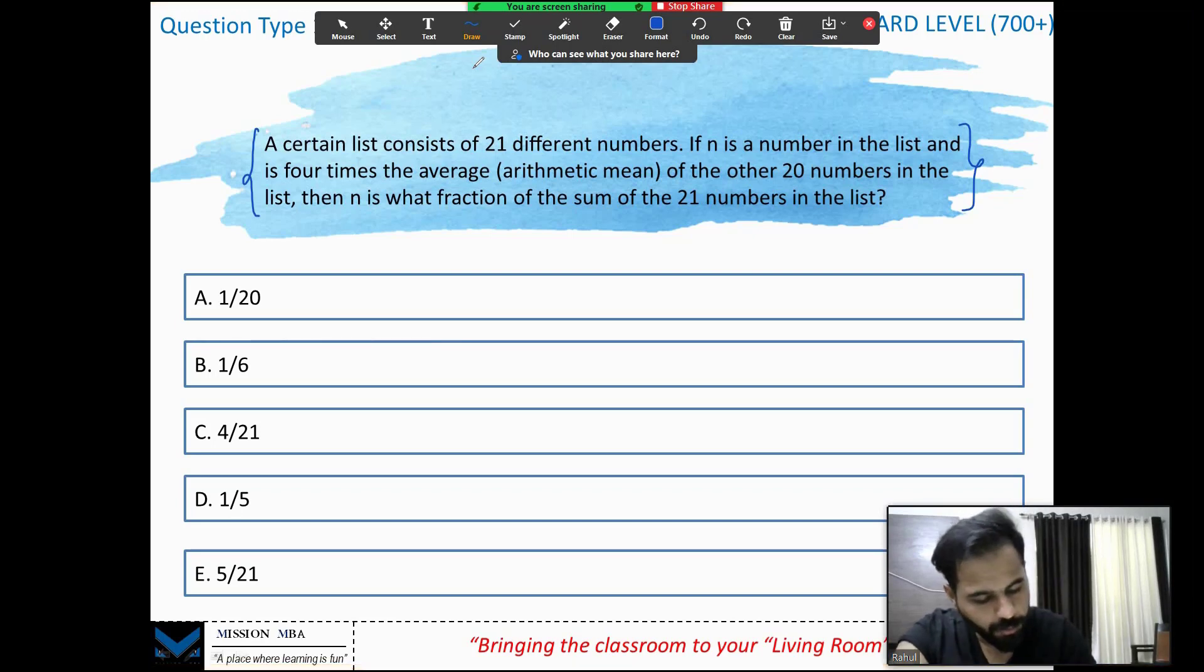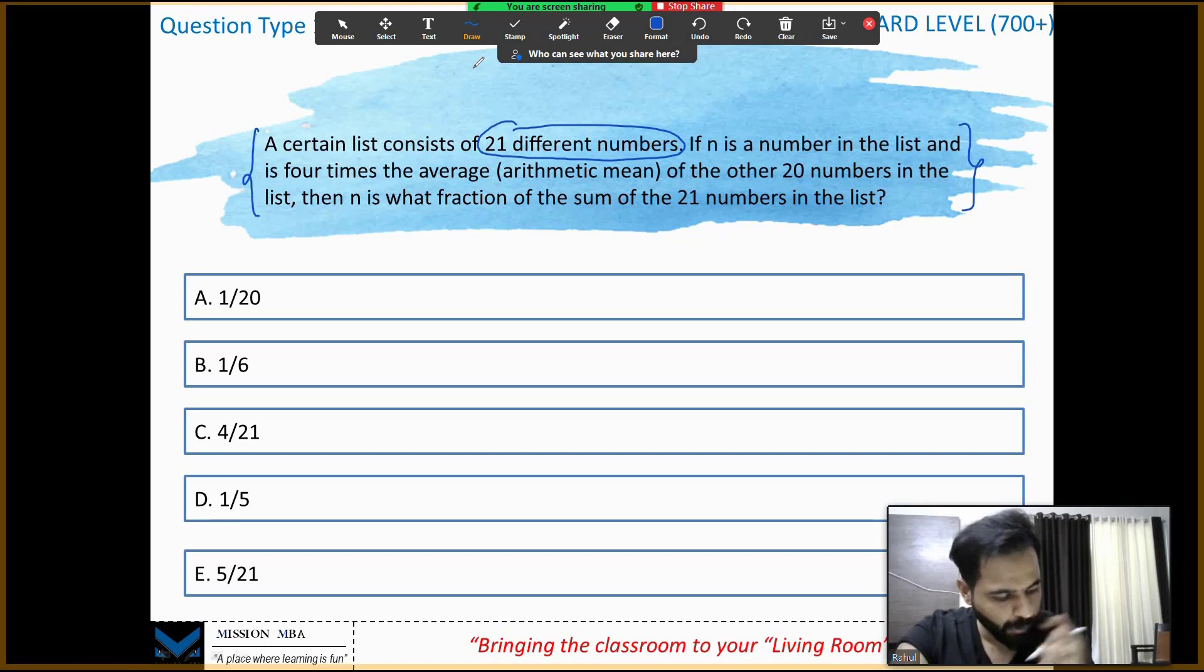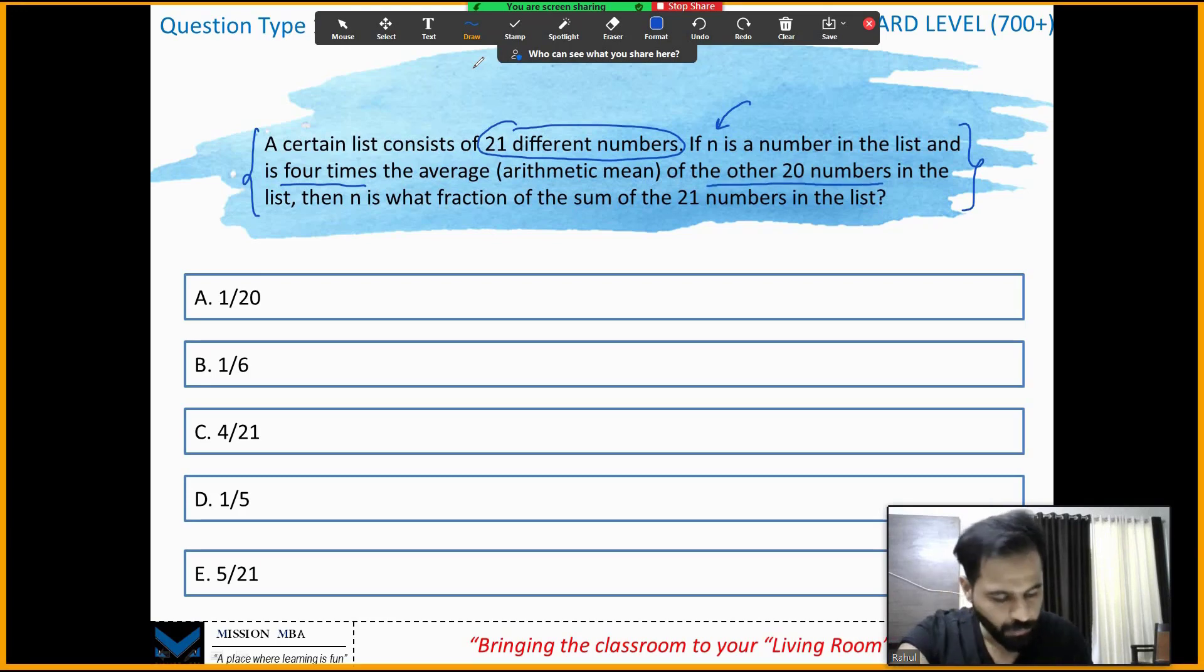A certain list consists of 21 different numbers. N is one of the numbers and is four times the average of the other 20 numbers. Nothing given about the other 20 numbers, just that they are different numbers.